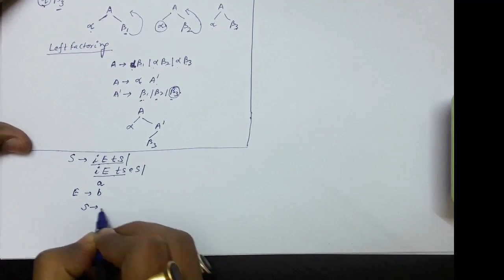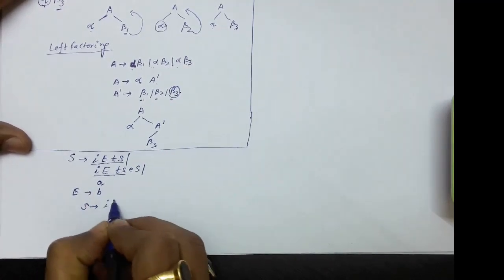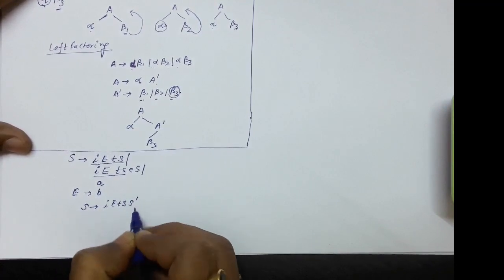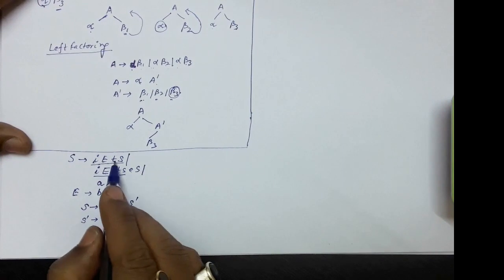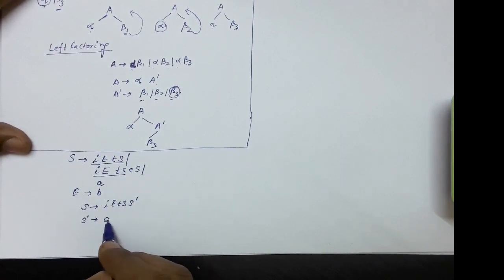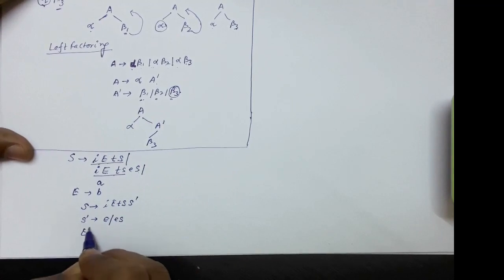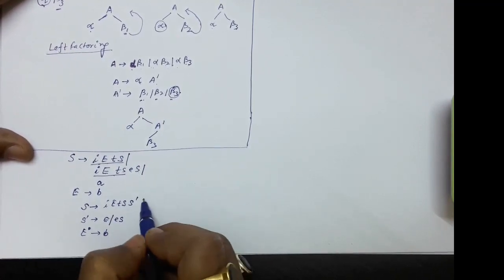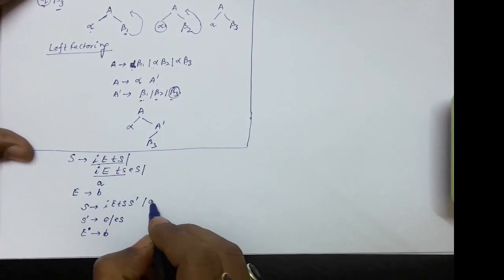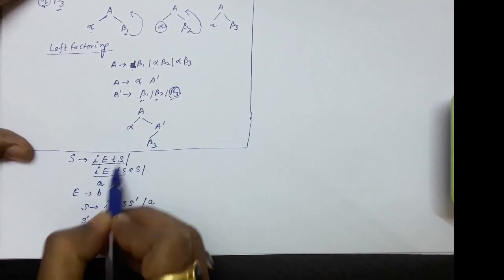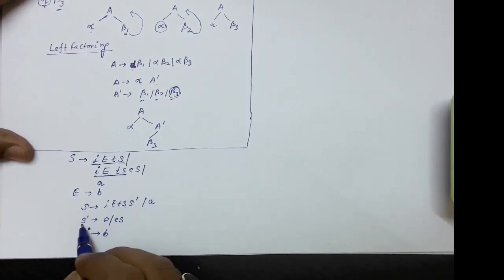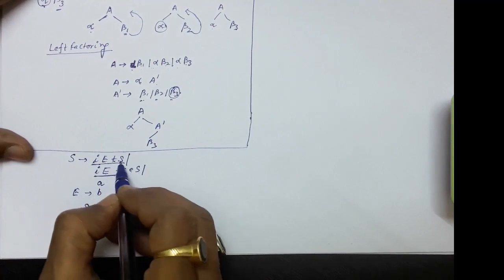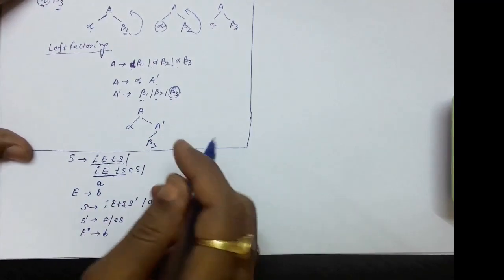After left factoring, S produces iEtS S′. Then S′ produces epsilon — because we have taken everything from the first production and nothing remains — or S′ produces ES. The rest of the productions remain the same: E produces B, and S produces A. So the common element iEtS is factored out, and the new variable S′ handles the remaining alternatives epsilon and ES.